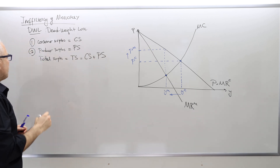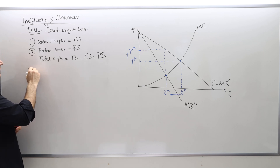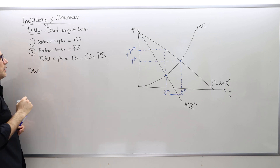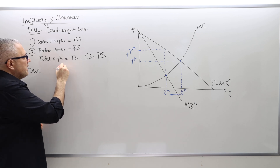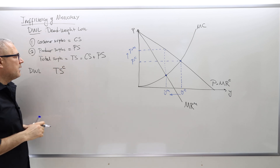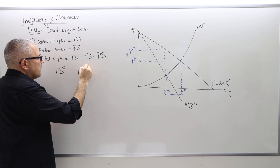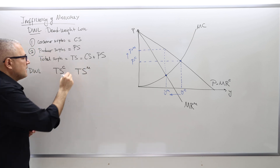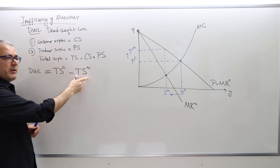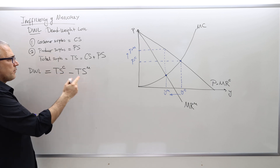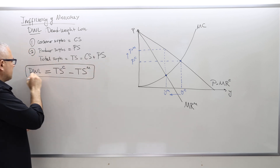So what is the deadweight loss? In order to calculate deadweight loss, you first have to calculate the total surplus in the competitive market, and then you calculate total surplus in the monopoly and subtract them. The first one is going to be bigger than the second one, so the difference is some positive number. This is how we calculate deadweight loss.